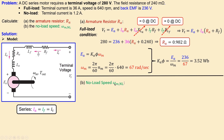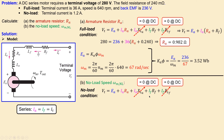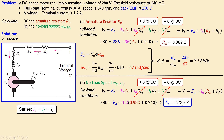For question B, the no-load speed omega_m_NL: we apply KVL again at no-load condition using the same simplified equation. The armature resistance and field resistance are unchanged. Substituting the no-load terminal current of 1.2 amperes, we can calculate the unknown no-load back EMF, which turns out to be 278.5 volts.